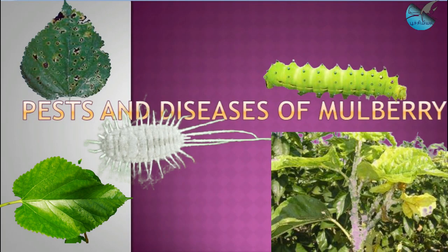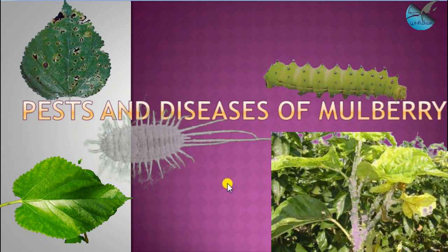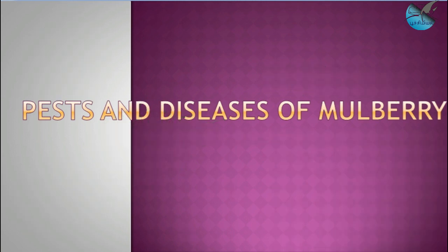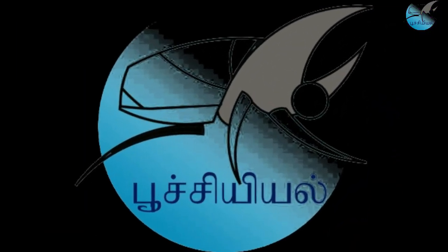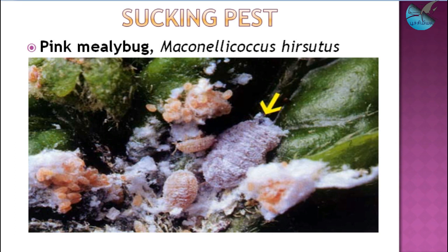Hi friends, welcome to the entomology class. So far we have completed different aspects of sericulture. The left out portion is the pests and diseases of mulberry crop, which is the main food for the mulberry silkworm production. I'm your teacher Vignesh. Let's get into the topic: kinds of insect pests that are feeding on mulberry.